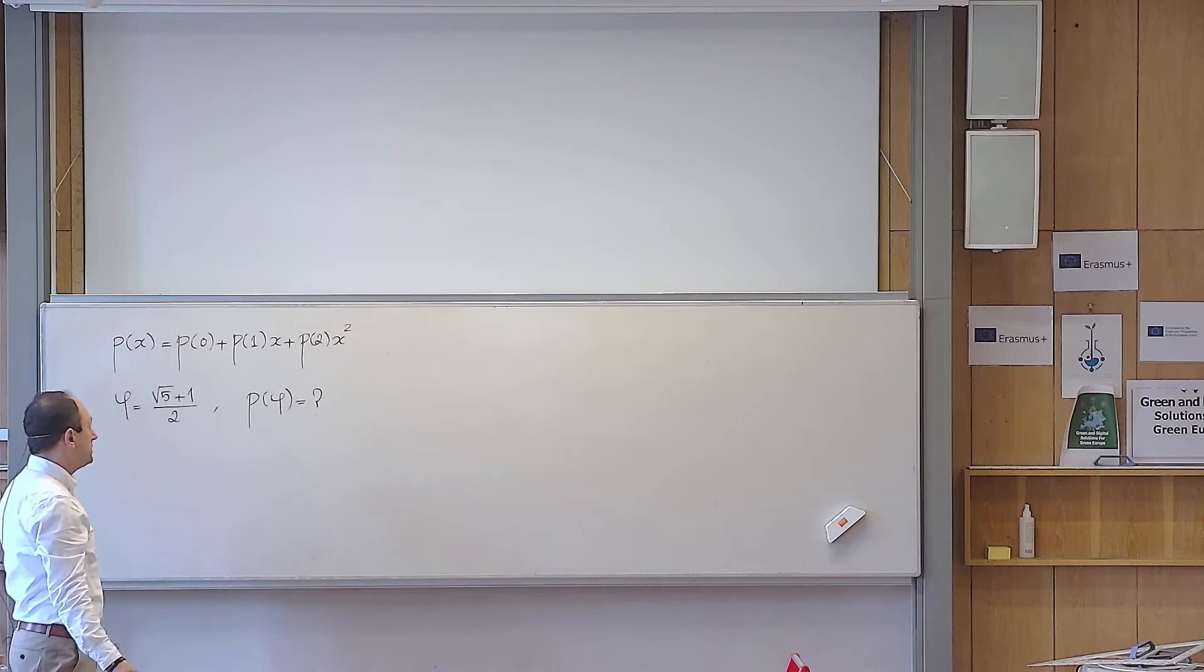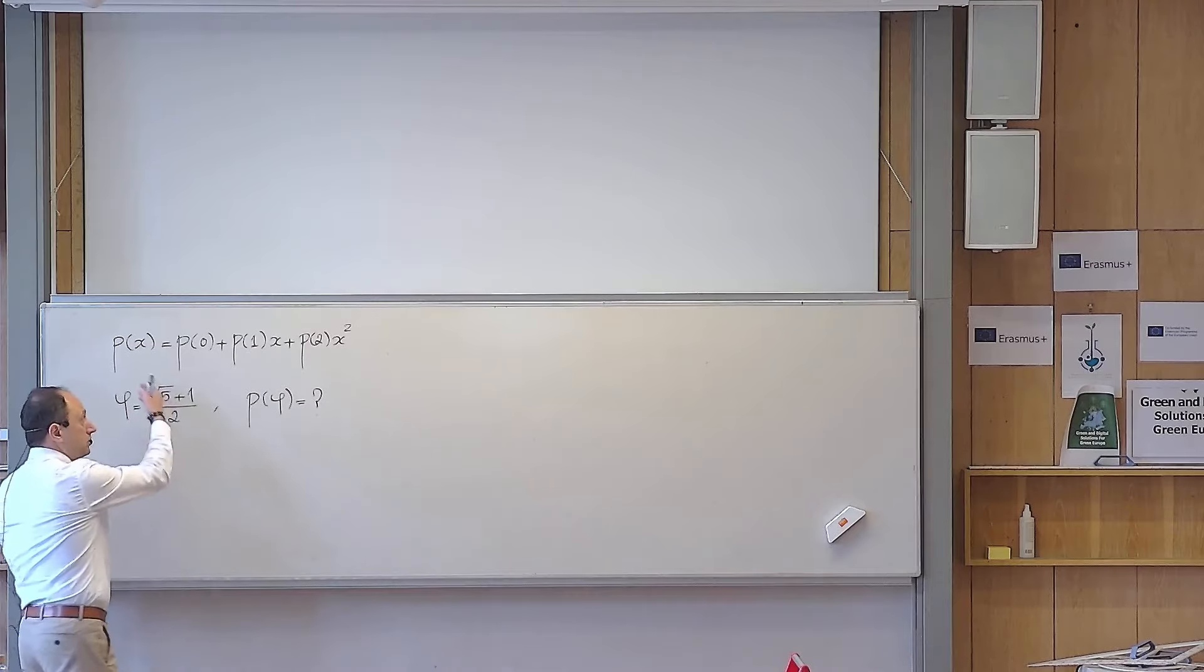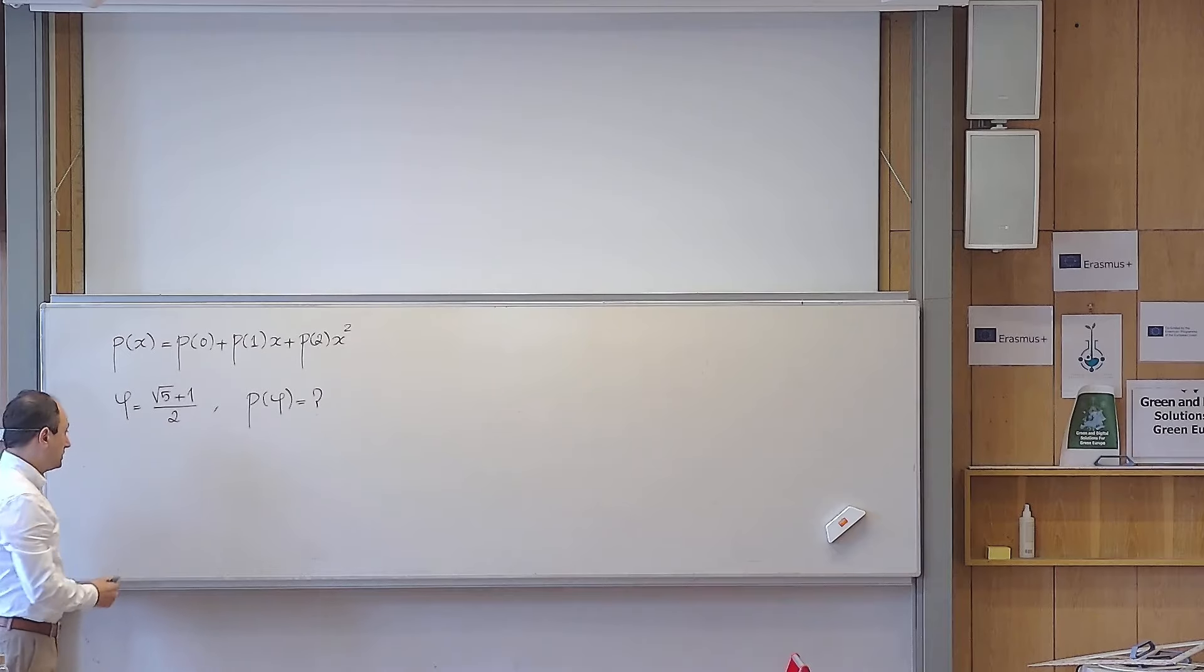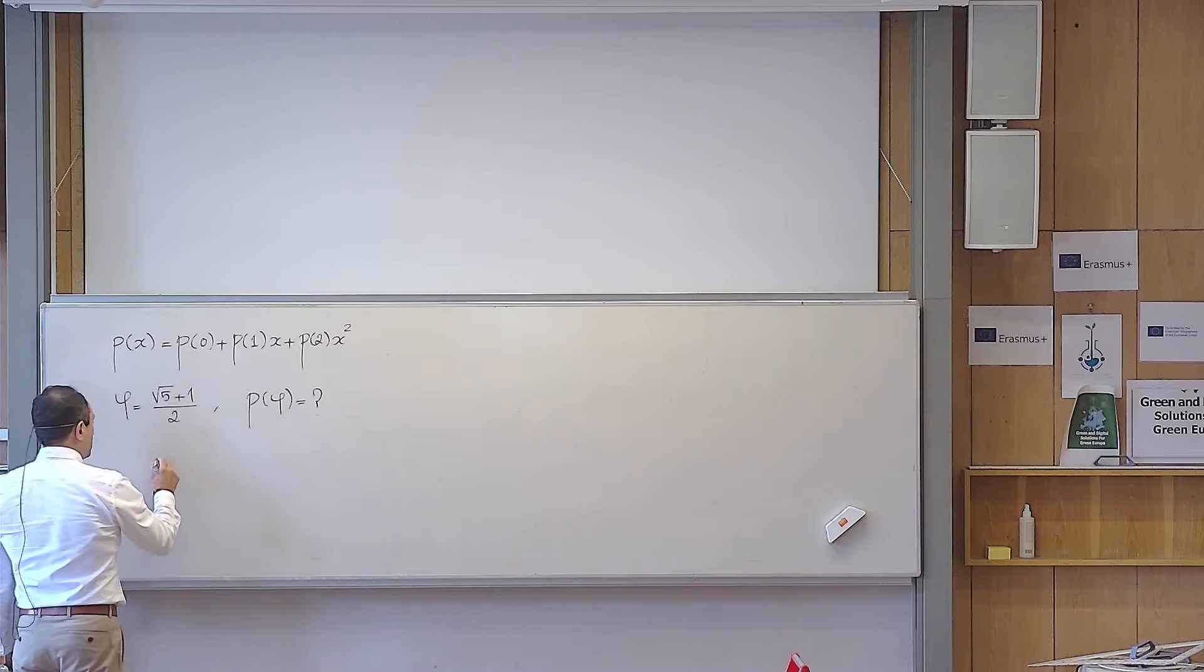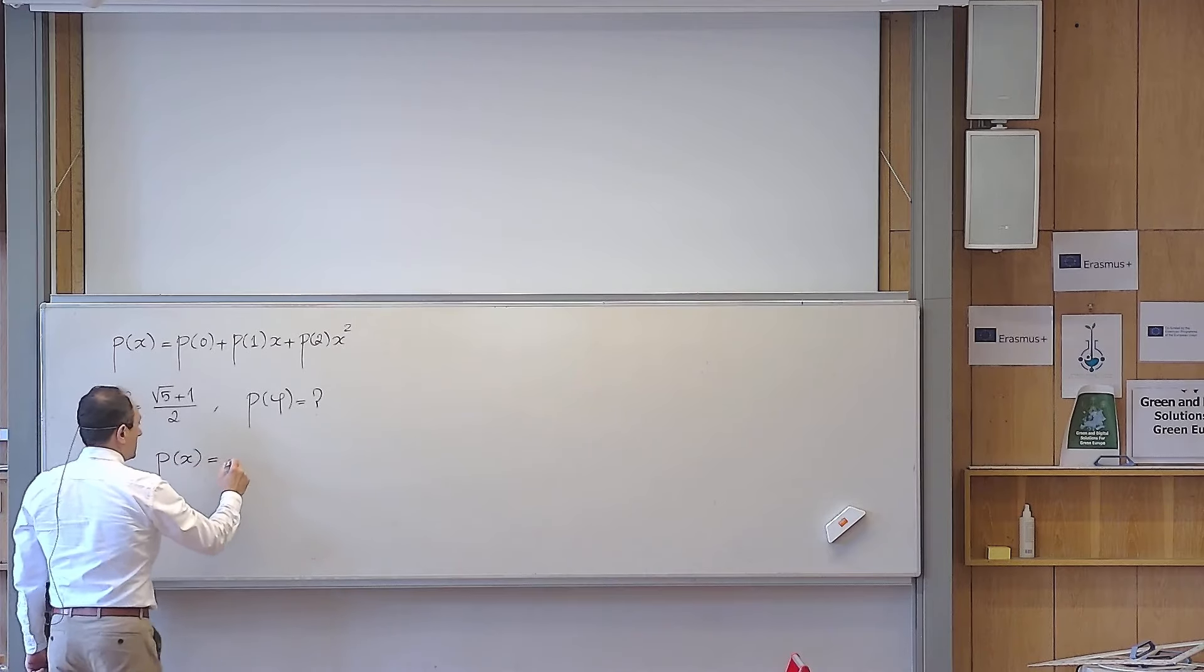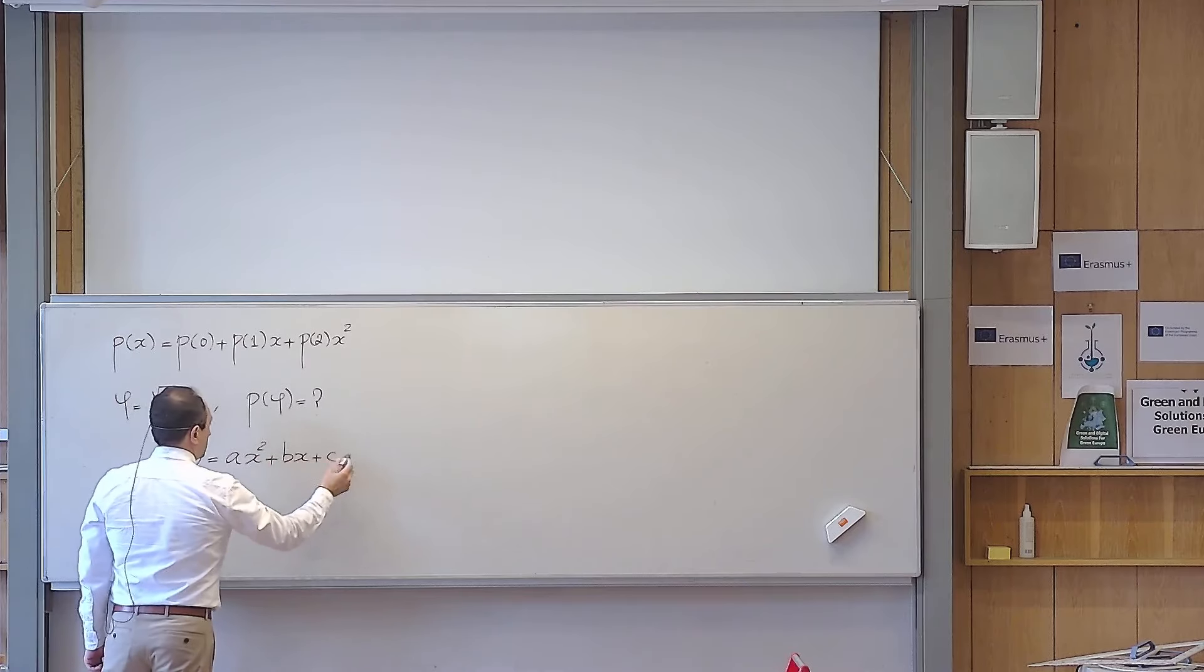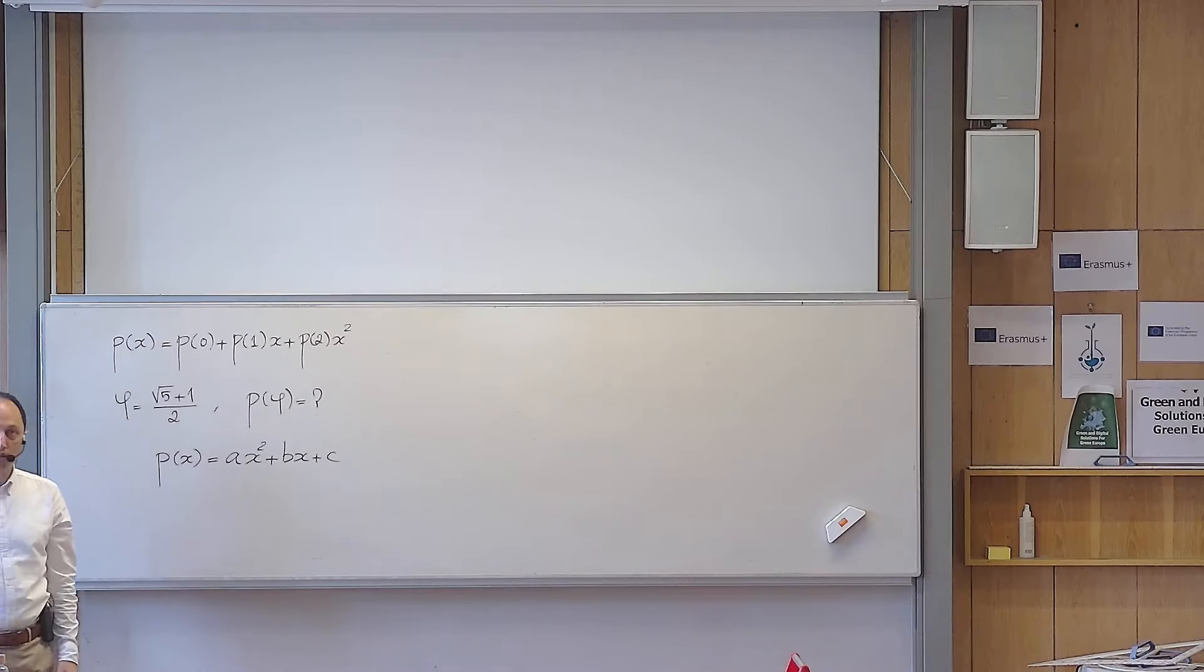Okay, so this means that the polynomial P(x) should be of second degree, because it is equal to the second-degree polynomial. And on the other hand, we know that a polynomial of second-degree can be written as ax squared plus bx plus c. This is the most general form of a second-degree polynomial.